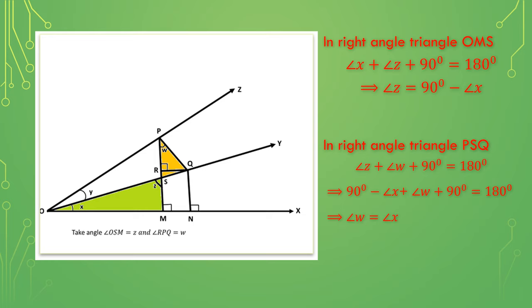In the right angle triangle OMS, we can see that angle x plus angle z plus 90 degrees equals 180 degrees, as the sum of the angles in the triangle equals 180 degrees. On simplifying, we get angle z equals 90 degrees minus angle x.